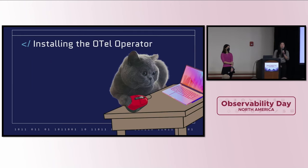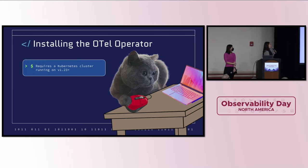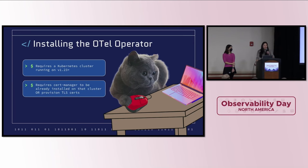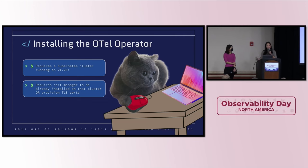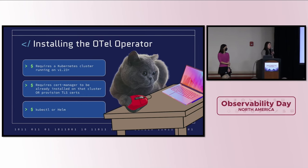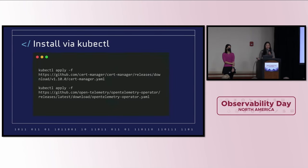So what do we need to install the operator and how do we do it? Before you install the operator, you must have a Kubernetes cluster running at least version 1.23. You also need either cert manager already installed in the cluster, or if you want to get around using cert manager, you just have to provision the TLS certificates in the right places. To install both cert manager and the operator, you can use kubectl or Helm. We're not going to cover provisioning TLS certs in this talk, but it will be included in our blog post. We've included commands to install both the operator and cert manager using kubectl here for your reference.